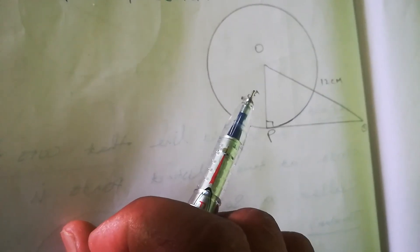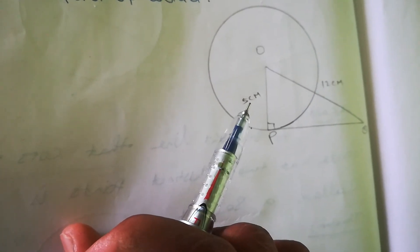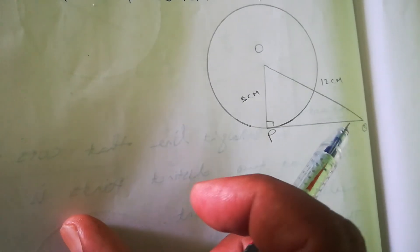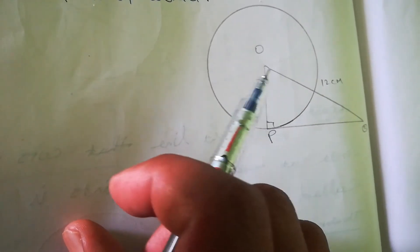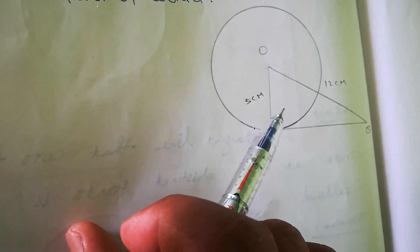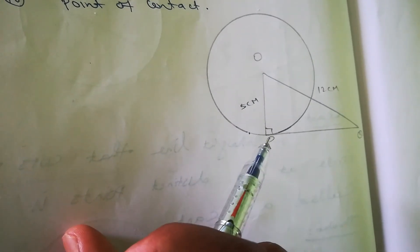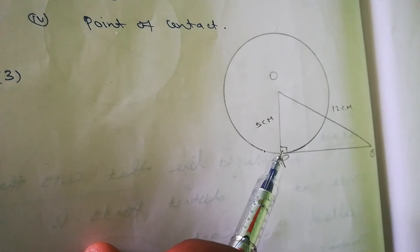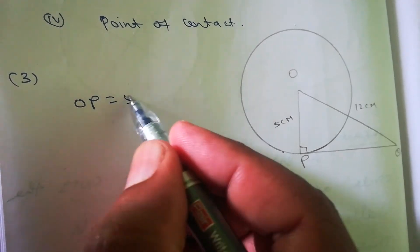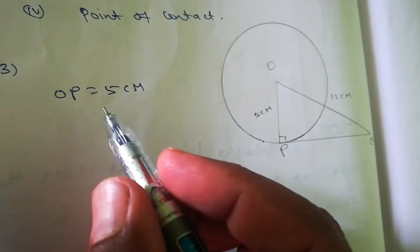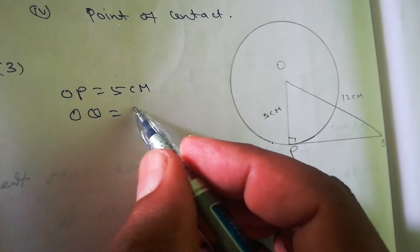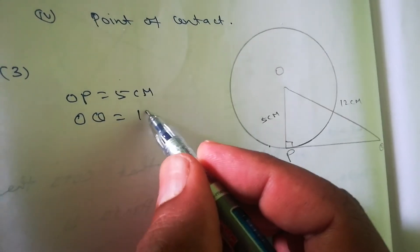Tangent PQ at point P of a circle, where the radius is 5 cm, meets a line through the center O at point Q, such that OQ is 12 cm. We need to find the length of PQ. We know the tangent is perpendicular to the radius, so OP = 5 cm (radius) and OQ = 12 cm (given).